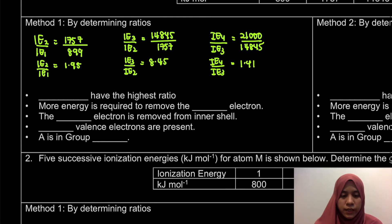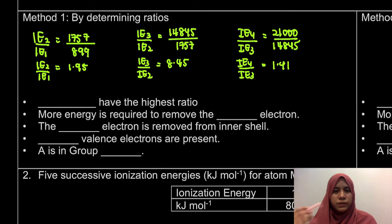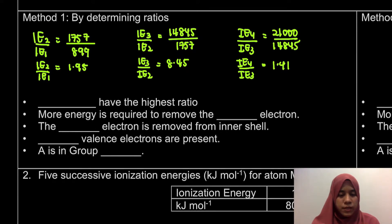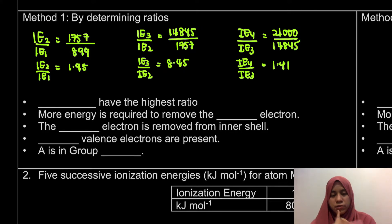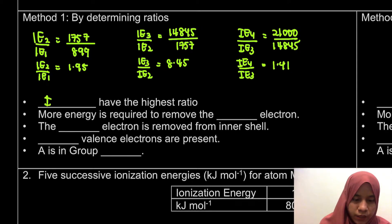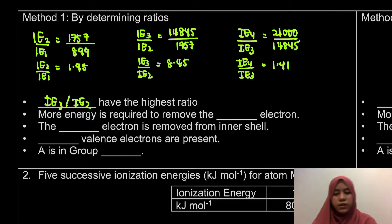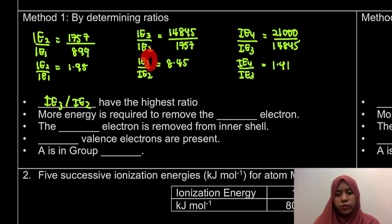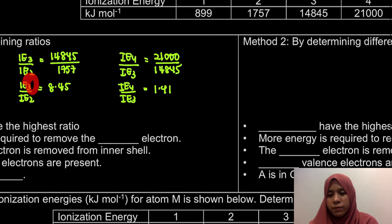Now from the ratio calculation, we determine which one has the highest ratio. As we can see, the highest ratio is IE3 divided by IE2. So IE3 divided by IE2 has the highest ratio, which means more energy is required to remove the third electron.